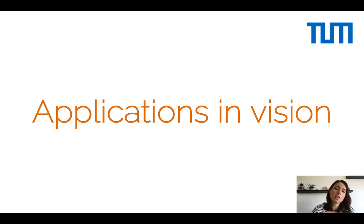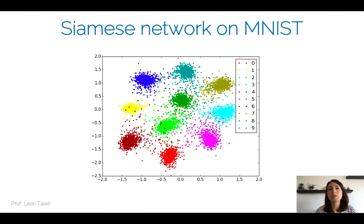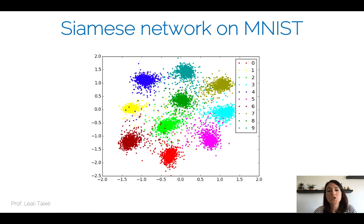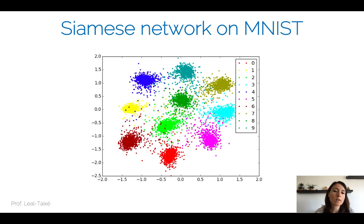Let's look at applications of Siamese neural networks in computer vision. First, Siamese networks trained for similarity learning can be used for clustering. On the MNIST dataset of digits 0–9, training a Siamese network for similarity learning produces 10 nice clusters, each color-coded, demonstrating effective clustering behavior.